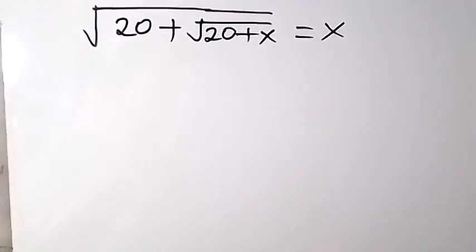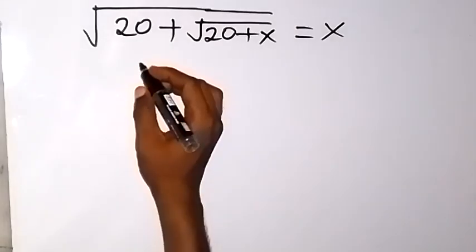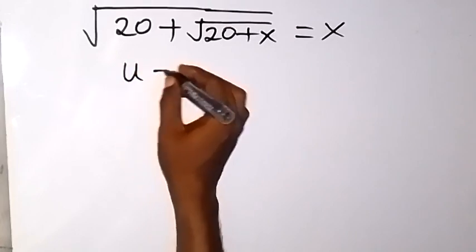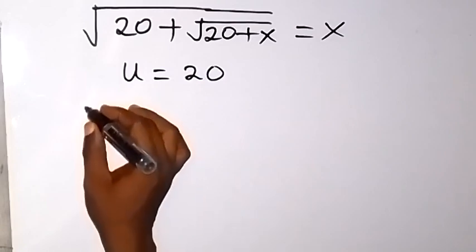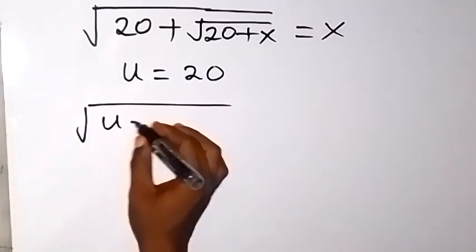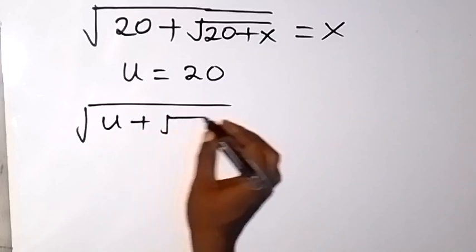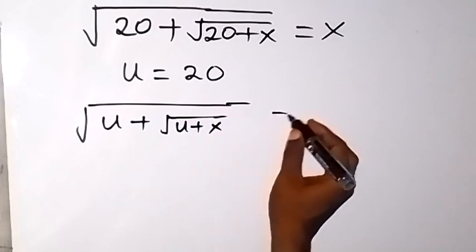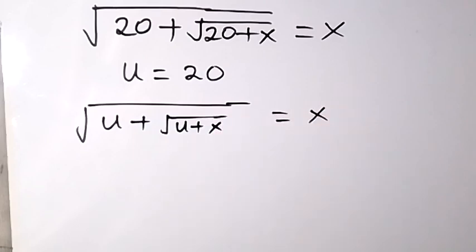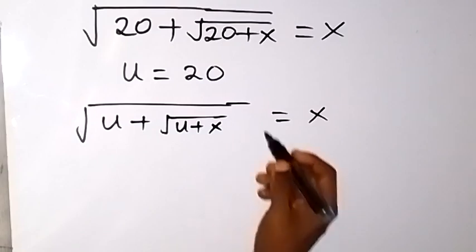Thank you for joining us. Here we want to solve this problem: square root of 20 plus root 20 plus x equals x. We are finding the value of x. Let u be equal to 20, and when we rewrite this, we have root u plus root u plus x equals x.